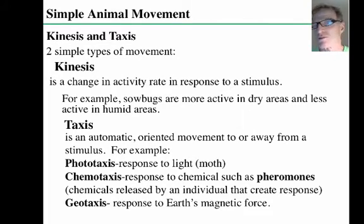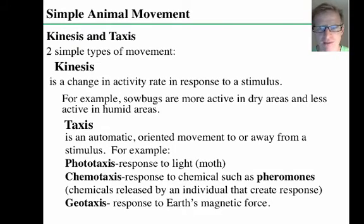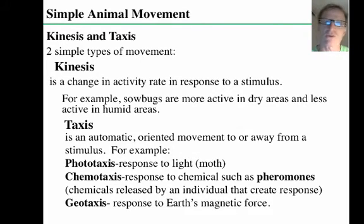Pheromones are also chemical signals produced oftentimes to attract members of the opposite sex, especially if an animal is in heat or in their breeding season, producing pheromones to attract for mating. Geotaxis is an example involving the Earth's magnetic fields that can cause an attraction or directional movement. Birds and other migrating animals sometimes cue into the Earth's magnetic field to migrate and know when to head north or south.